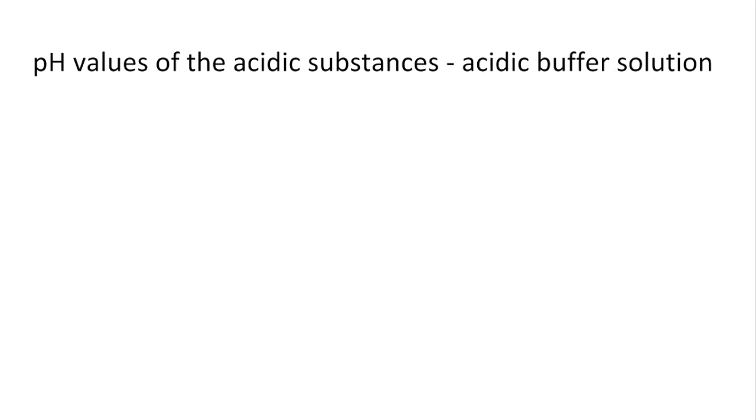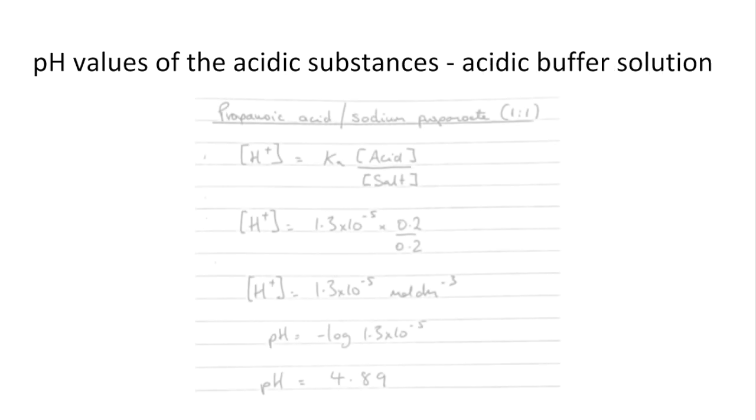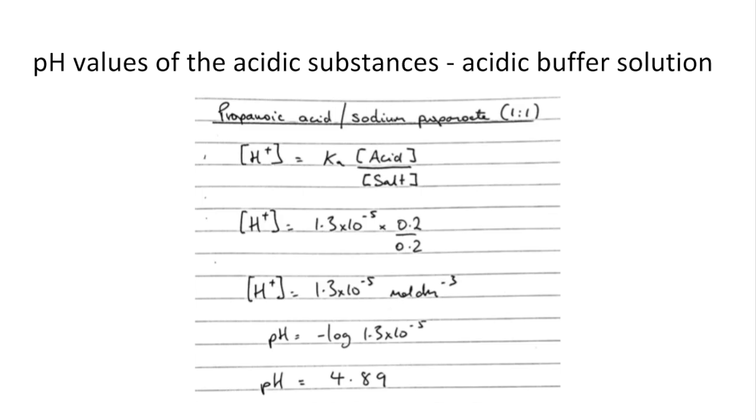And then the pH of the acidic buffer solution. We were told that it was a 1 to 1 ratio of acid to salt. So I've put the formula in there for the H plus concentration for a buffer. So it's Ka times the acid concentration over the salt concentration. Acid over salt is my silly way to remember that. They're just going to cancel because of the 1 to 1 ratio.